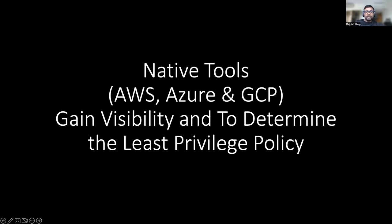Hi everyone. This is the second part of the video. In this video, we are going to talk about what are the different native tools being provided by each of the CSPs to understand who has access to what and to determine the least privilege policy.